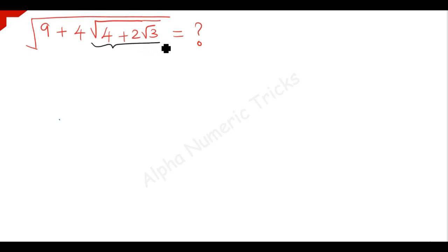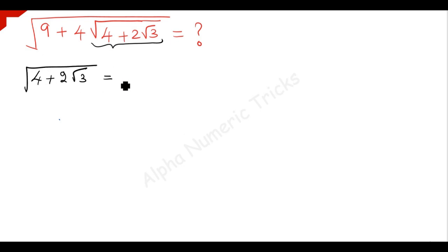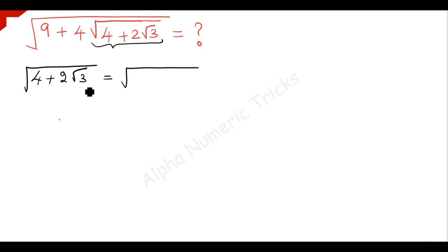For that, consider this inner square root alone — we have 4 plus 2 times root 3. We want to write this in the form (a + b) squared to make simplification easy. Since root 3 is present, we write this as 4 plus 2 times root 3 times root 1.